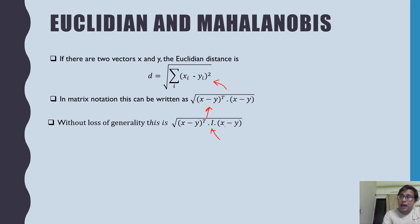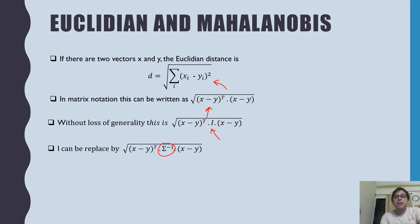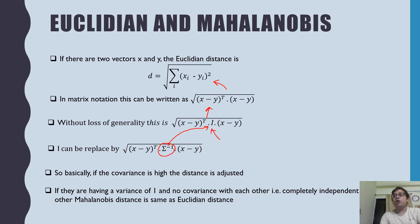Instead of the identity matrix, we can use the inverse of the covariance matrix. The covariance matrix is one of the important characteristics of multivariate statistics — it describes any multivariate dataset. So we replace I with C (the covariance matrix). If the covariance is high, the distance will be reduced; if it is not high, the distance remains more or less intact. The ideal case is when the covariance matrix is the identity matrix, in which case Mahalanobis distance equals Euclidean distance. So Euclidean distance is actually a special case of Mahalanobis distance.